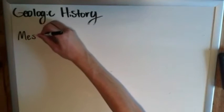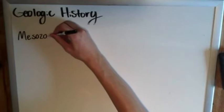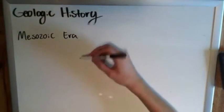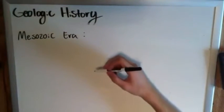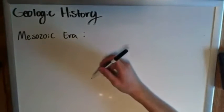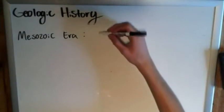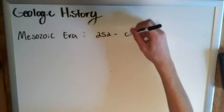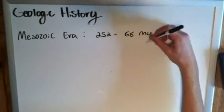Hey everyone, welcome back. Today we're continuing our journey up through geologic history by progressing from the Paleozoic era into the Mesozoic era. If you know anything about the Mesozoic era, hopefully it is that this was basically when we had dinosaurs. That's one of the biggest things most people are aware of. The Mesozoic era spanned from 252 to 66 million years ago.